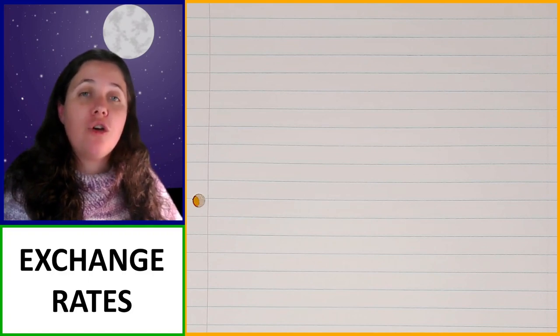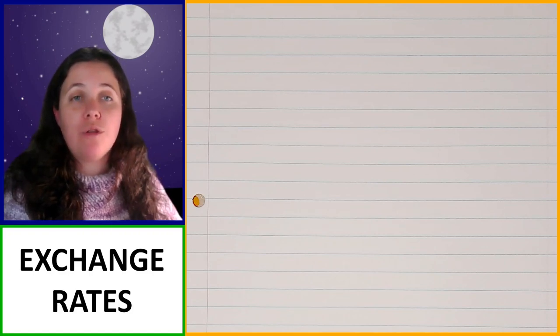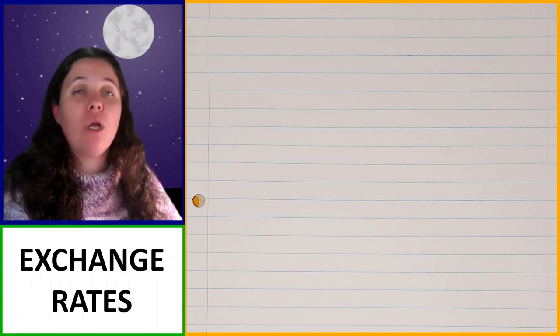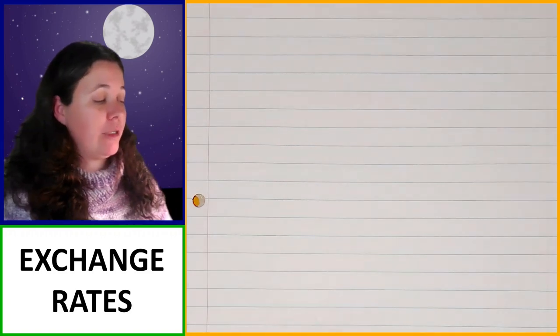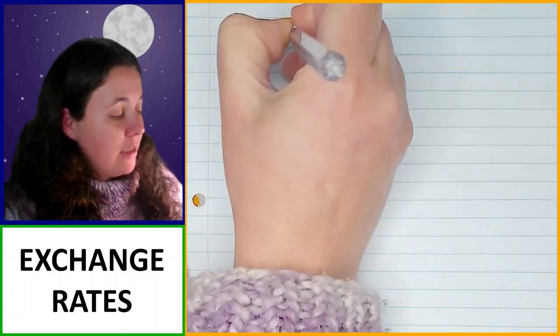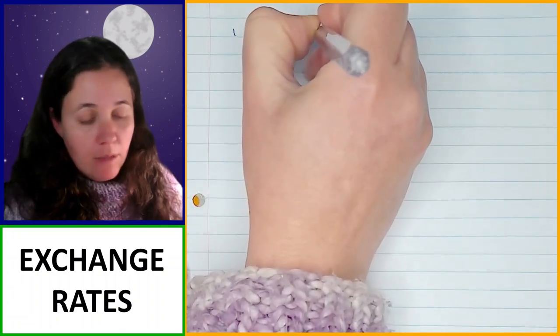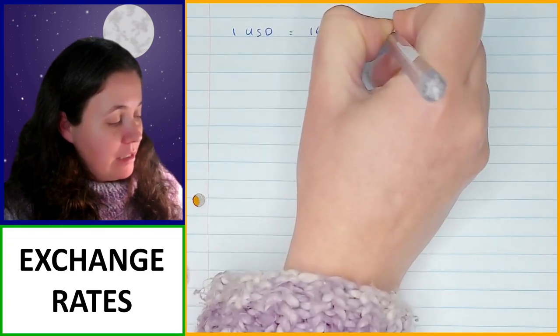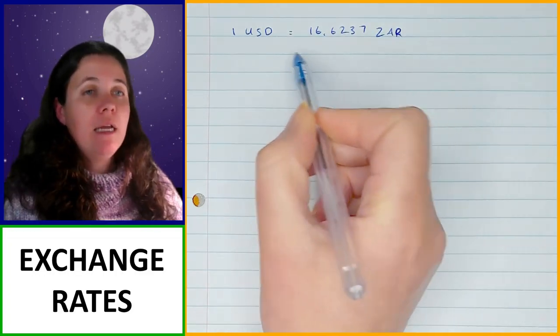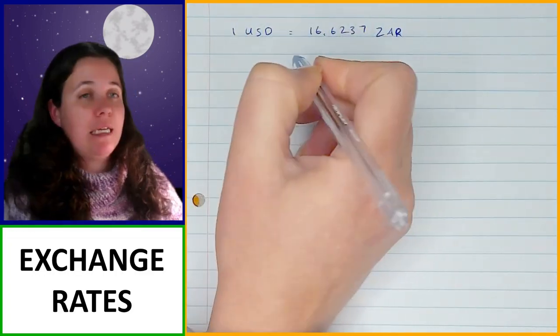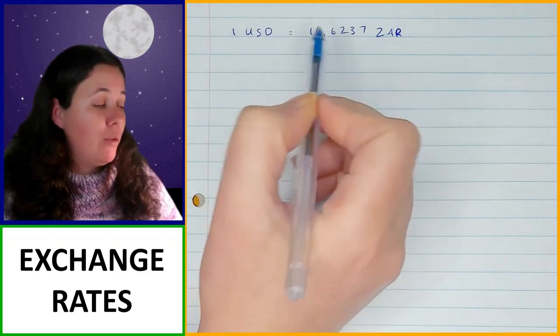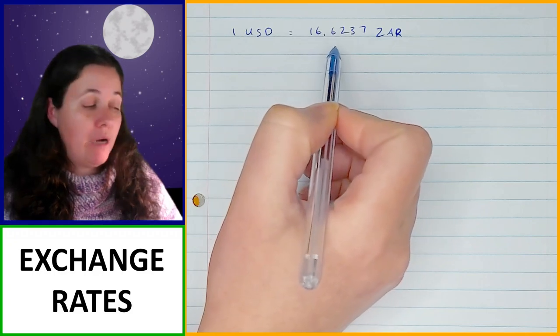We can use the exchange rates to know how much one currency is worth in comparison to another, and what it actually tells us is how much you need of one currency to buy one unit of another currency. So it can be represented something like this, where you could have 1 USD is equal to 16.6237 ZAR. ZAR representing South African rands. So what this is telling us is that for every USD that something costs, we would have to pay 16.6237 rand.